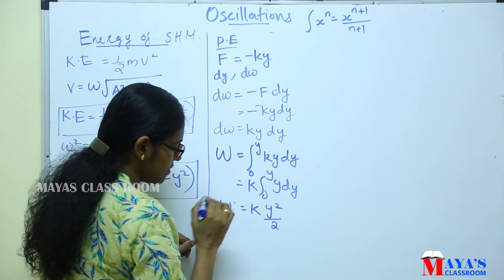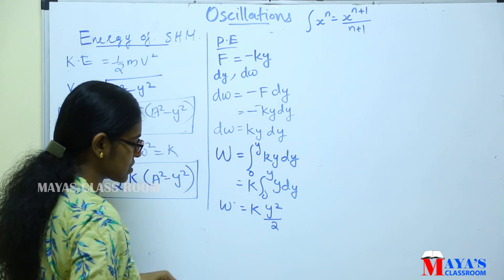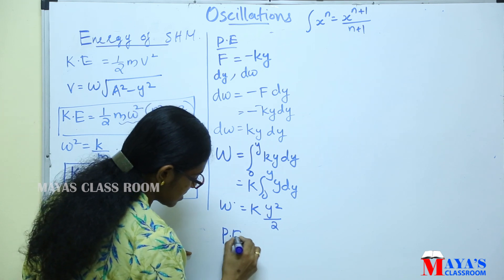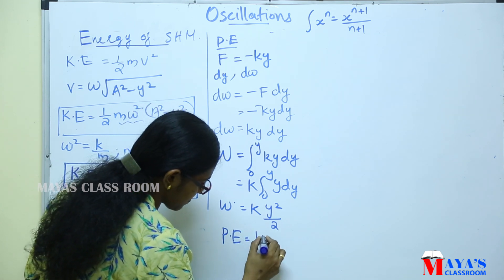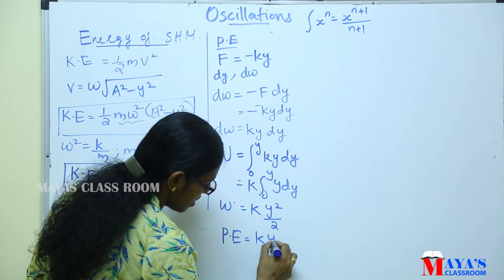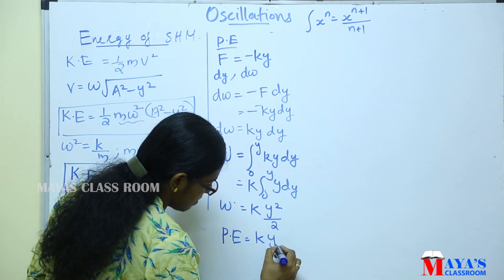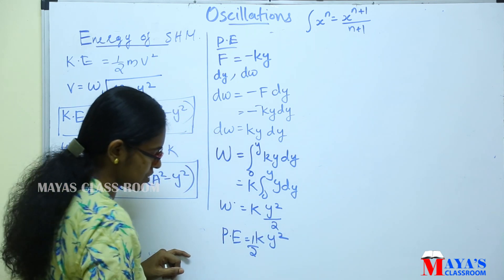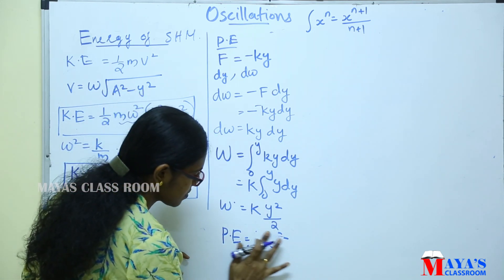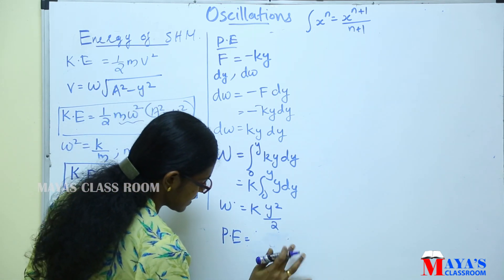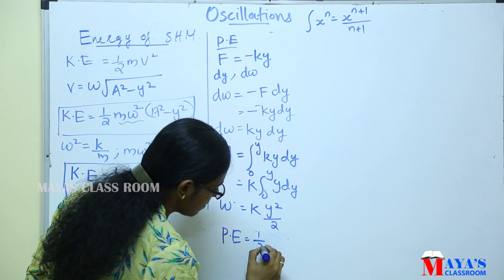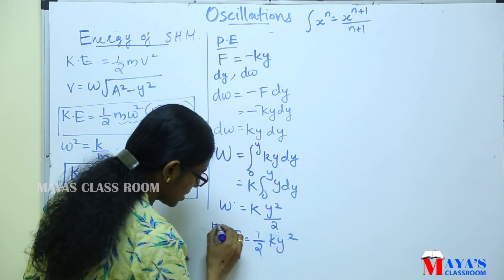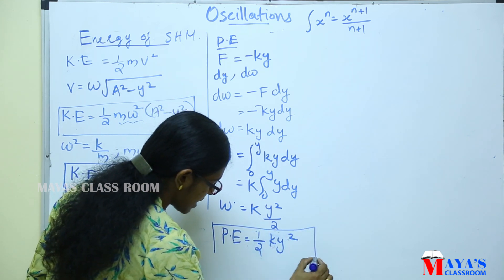This work done represents the potential energy. Therefore, potential energy is equal to half k y squared.